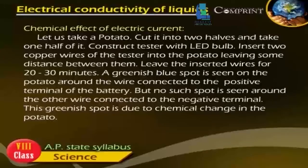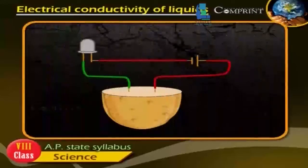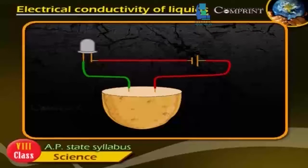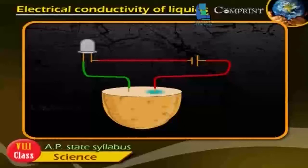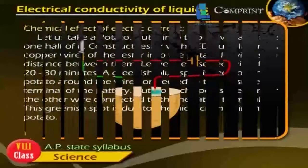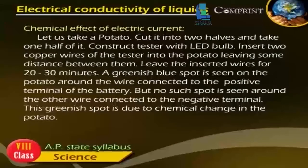Chemical effect of electric current. Let us take a potato, cut it into two halves, and take one half of it. Construct a tester with an LED bulb. Insert two copper wires of the tester into the potato, leaving some distance between them. Leave the inserted wire for 20 to 30 minutes. A greenish blue spot is seen on the potato around the wire connected to the positive terminal of the battery, but no such spot is seen around the other wire connected to the negative terminal. This greenish spot is due to the chemical change in the potato.